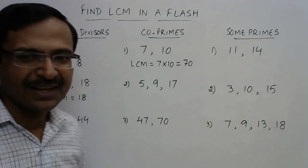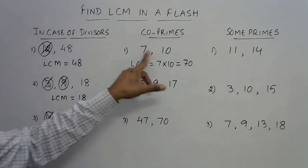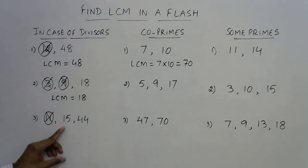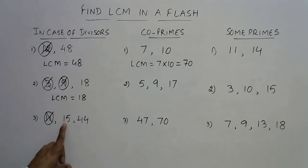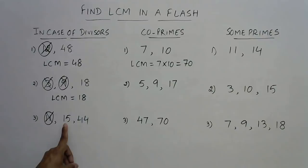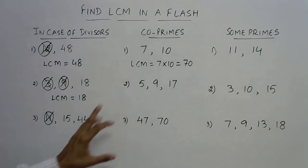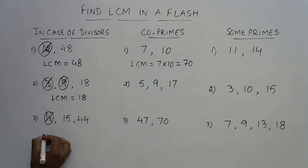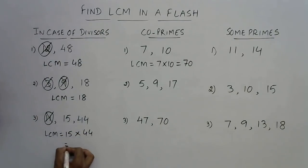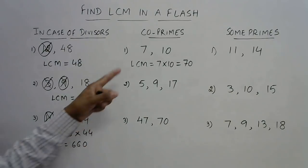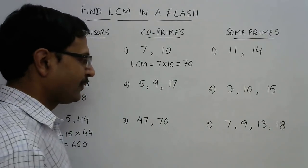Once you know that whenever two numbers are co-prime their LCM is their product, you can apply it to 15 and 44. Everybody knows 15 = 3 × 5, so we have 3 and 5. In 44 we have 2, 2, and 11. There are no common factors between 15 and 44, so they are co-prime. Therefore their LCM is simply their product: 15 × 44 = 660. So 660 is the LCM of those three numbers — 11, 15, and 44.